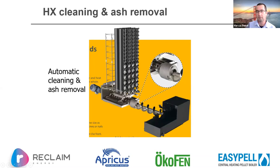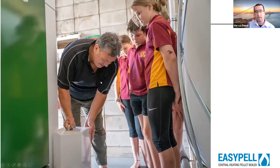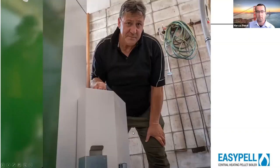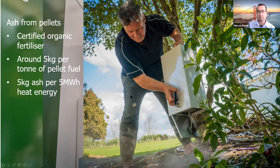The external ash box is easily removed — as demonstrated by a caretaker at Netherton School showing the EnviroSchools team, picking it up and dumping it straight on the garden. One thing to note: ash from pellets is a certified organic fertilizer. There are no disposal issues at all — it's essentially pure potash, great for tomatoes and other fruits and vegetables.